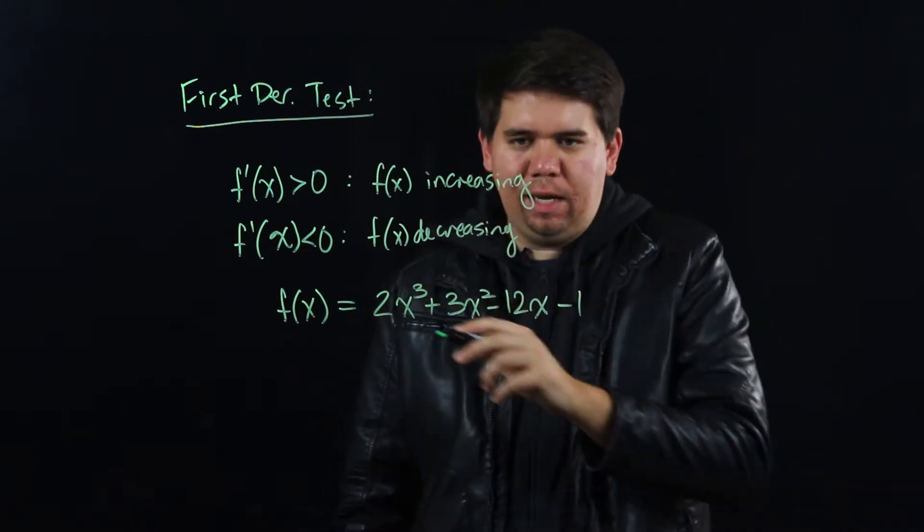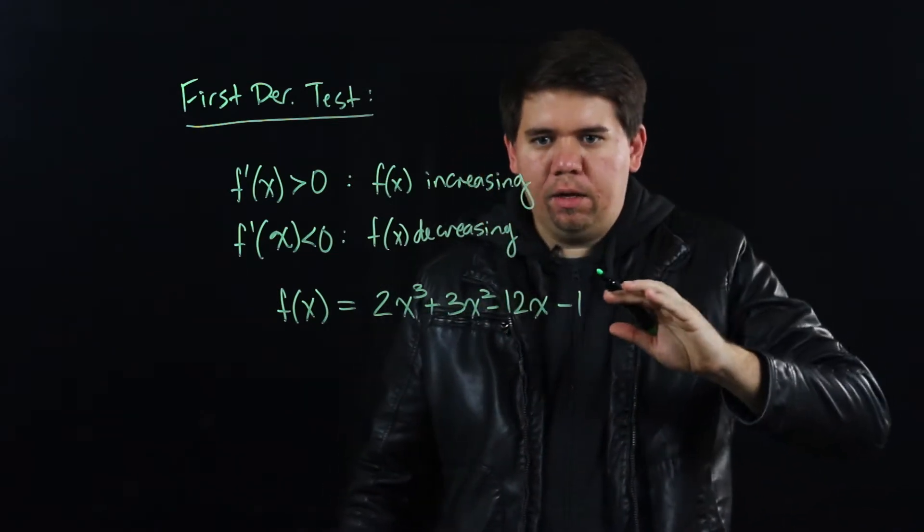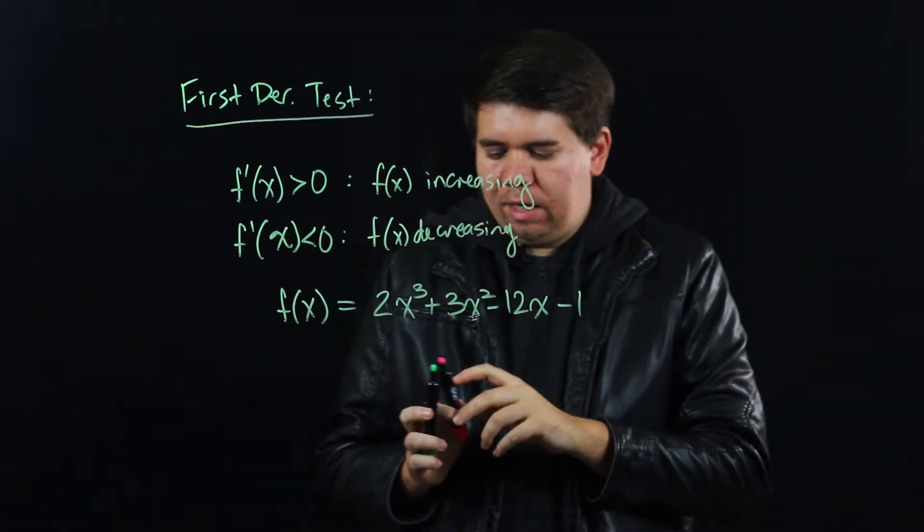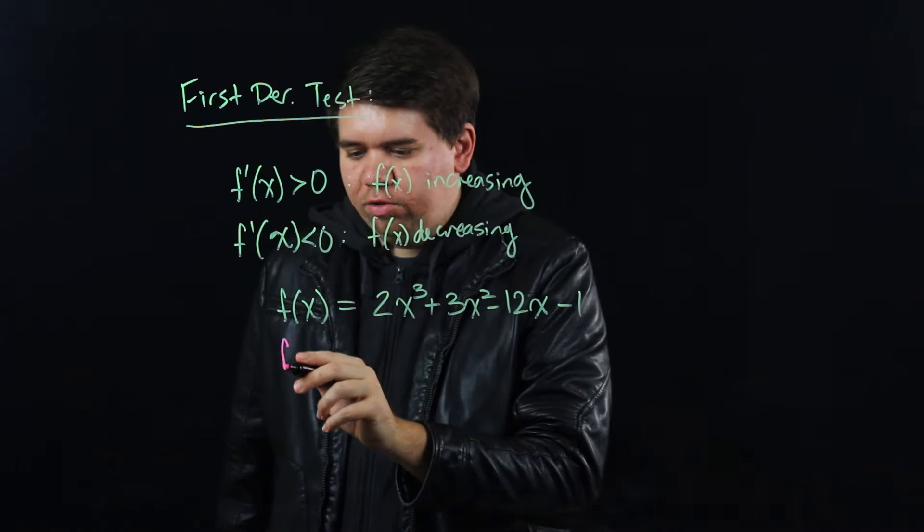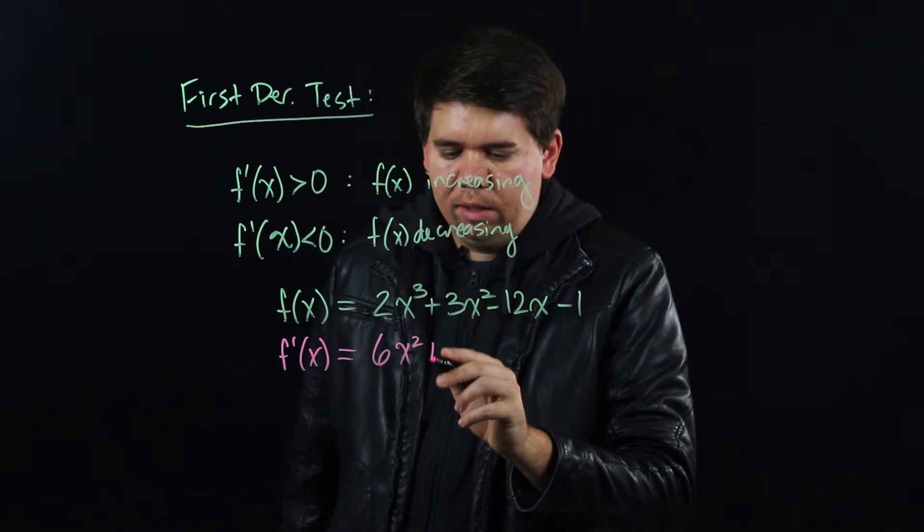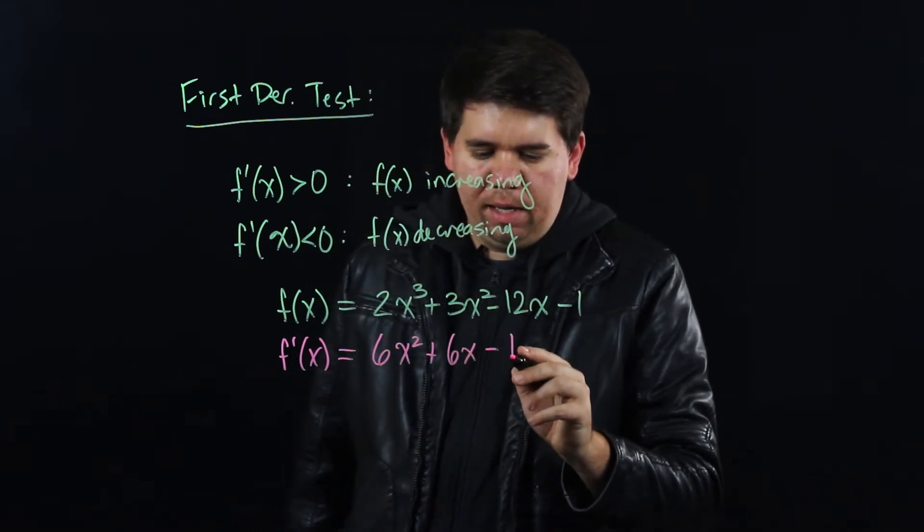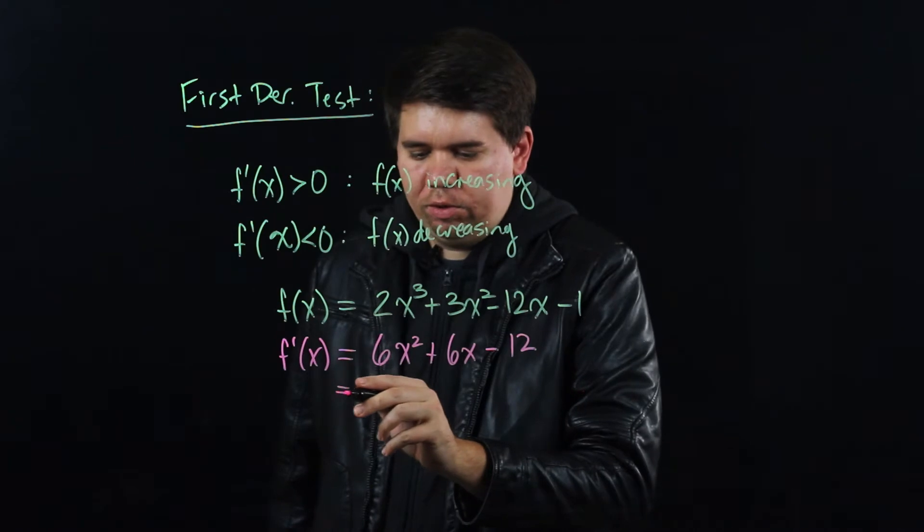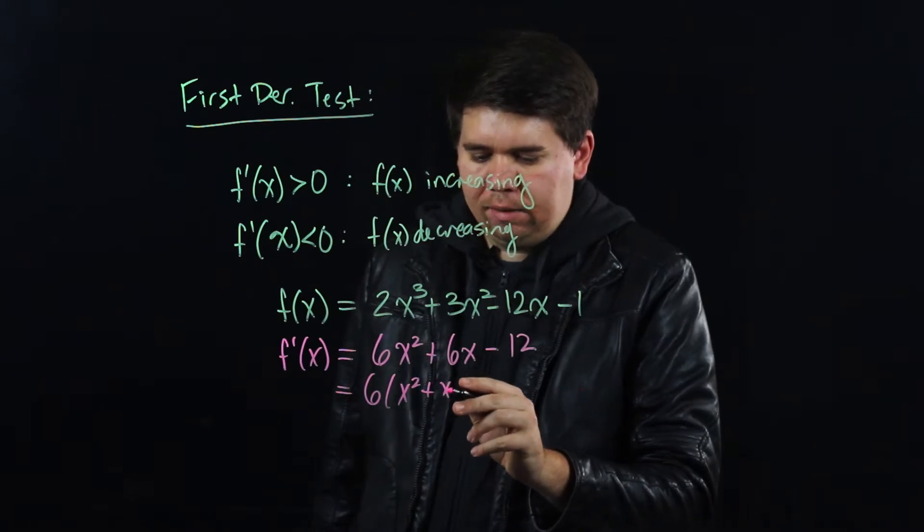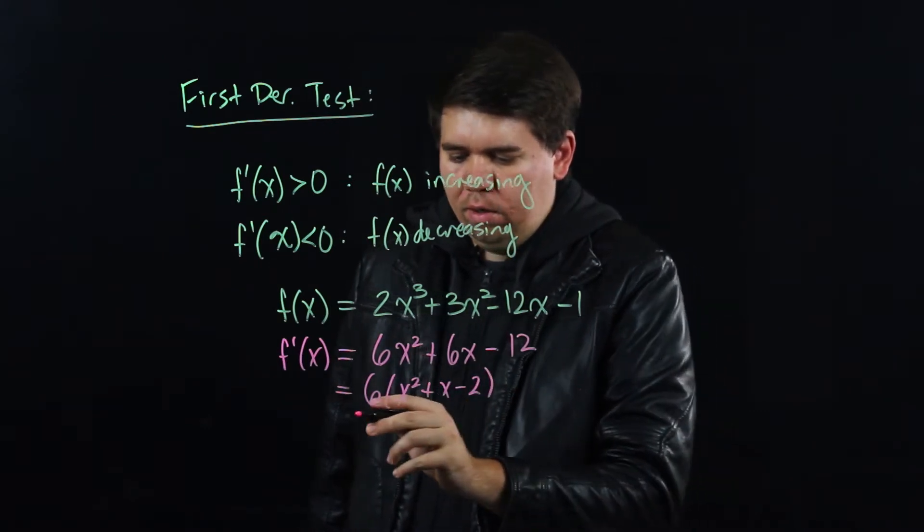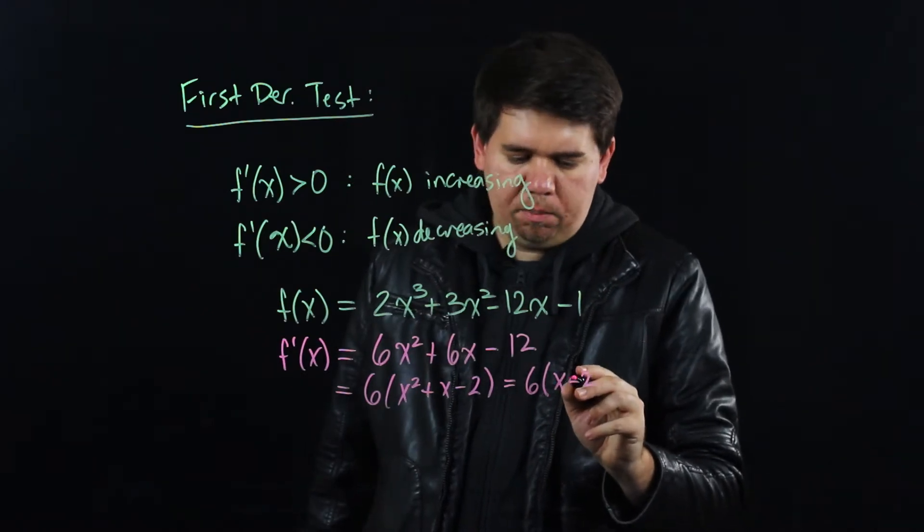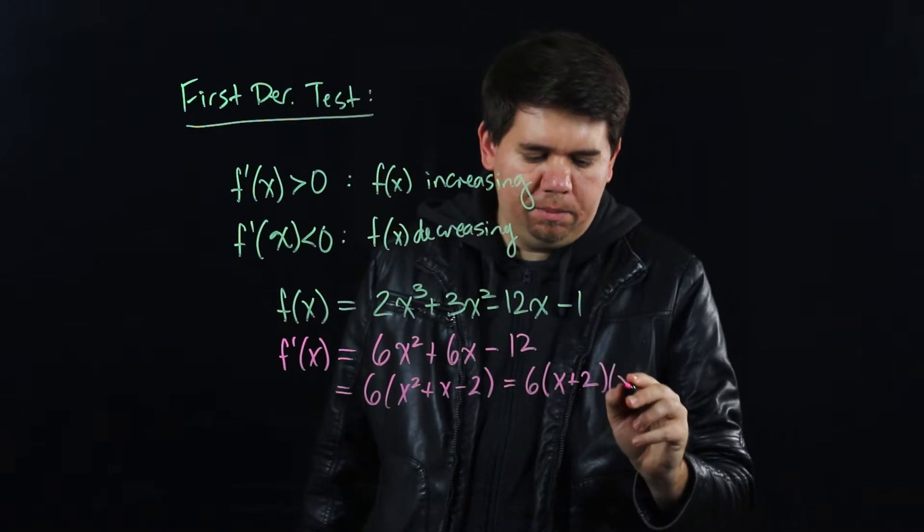What we're going to do is, in order to understand the maximums and minimums, be them absolute or local, we're going to begin by looking at the derivative of this function. So the derivative of the function is 6x² + 6x - 12, which we can factor as 6(x² + x - 2), or that's the same thing as 6(x + 2)(x - 1).